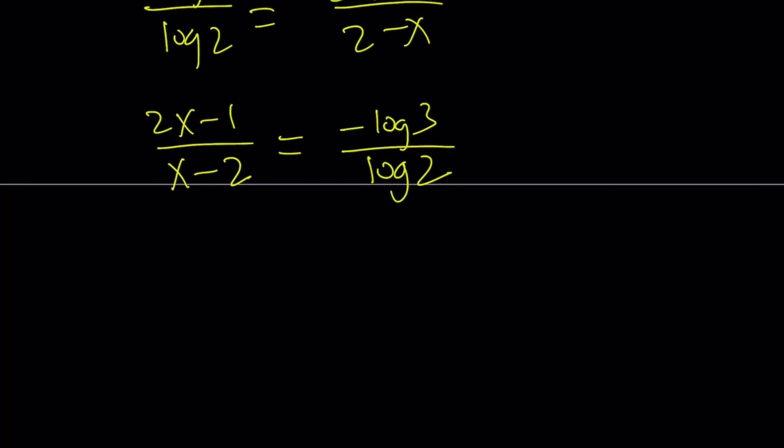this can be written again, using the change of base in the opposite direction. This can be written as negative log 3. But this time, we're using 2 as a base. All right?